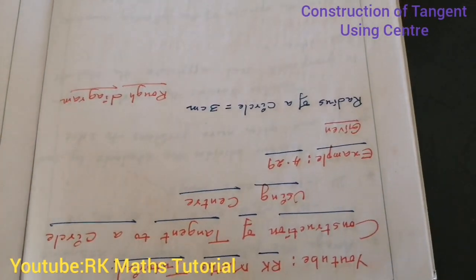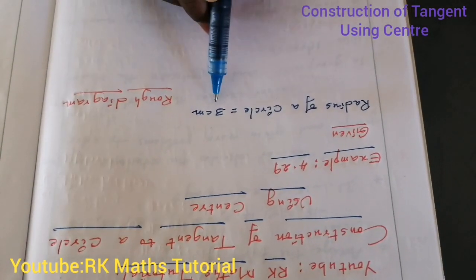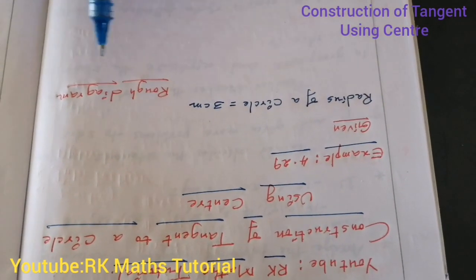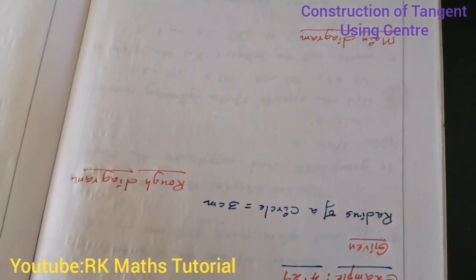So first, the circle has radius of 3cm. We'll do the rough diagram. So let's start with the rough diagram.